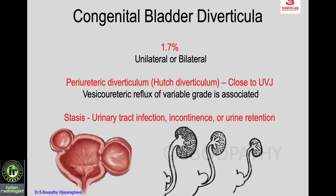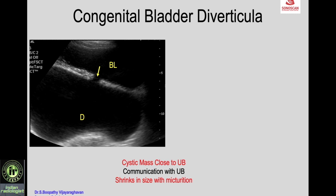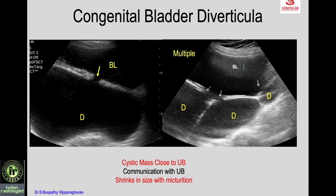The main problem is urinary stasis, which results in urinary tract infection, incontinence, and rarely urinary retention due to pressure on the urethra. On imaging, you see the urinary bladder with a posterior cystic mass communicating with the bladder lumen, confirming it is a vesical diverticulum. Both the bladder and diverticulum decrease in volume after micturition.